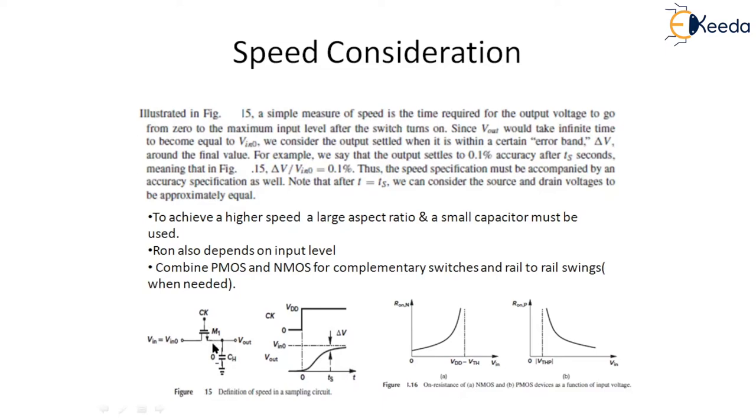From the circuit in this figure, we surmise that the sampling speed is given by two factors: the on resistance of the switch and the value of the sampling capacitor.